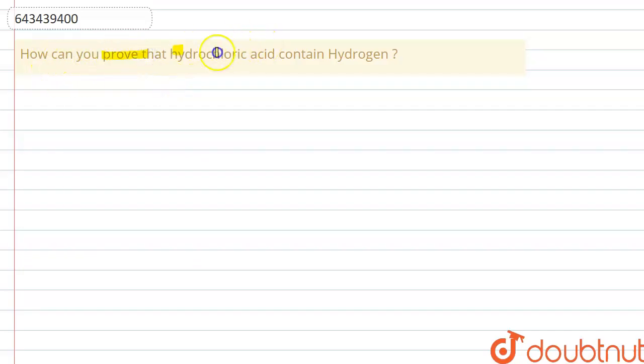In this question they are asking us how can we prove that hydrochloric acid, that is HCl, contains hydrogen. So for that we have to conduct an experiment using a voltameter.